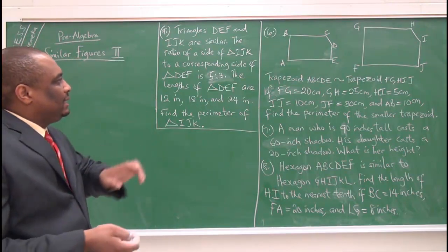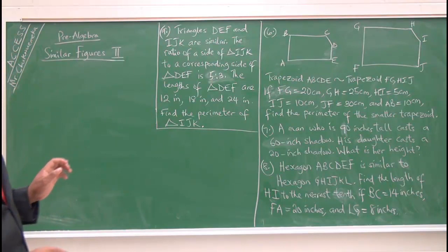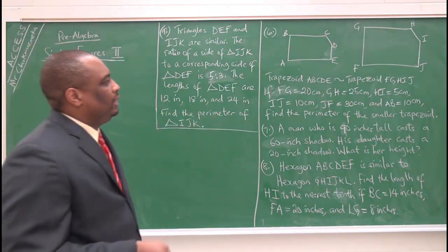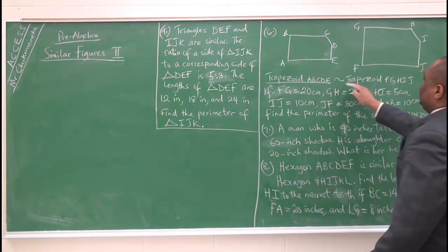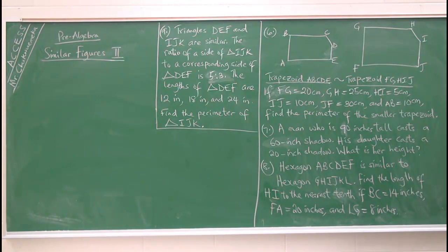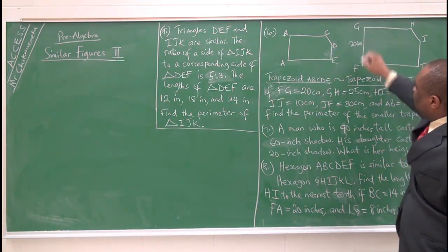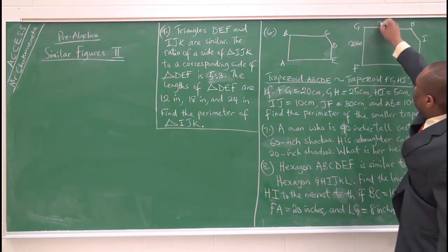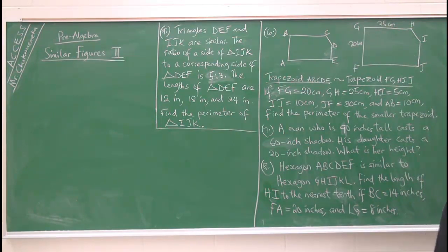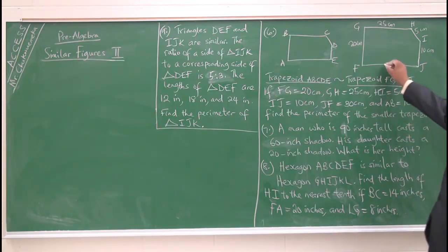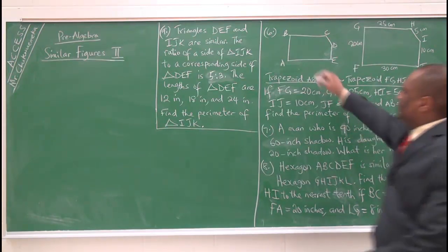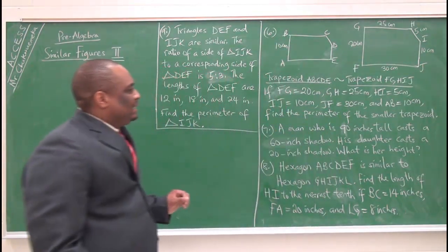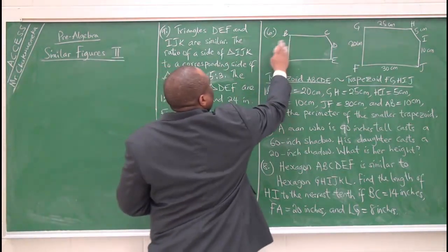Question six: trapezoid ABCDE is similar to trapezoid FGHIJ. They gave us FG = 20 centimeters, GH = 25 centimeters, HI = 5 centimeters, IJ = 10 centimeters, and JF = 30 centimeters. They also gave us AB = 10 centimeters and say we should find the perimeter of the small trapezoid.